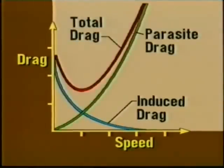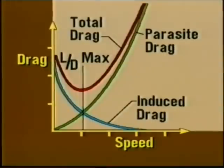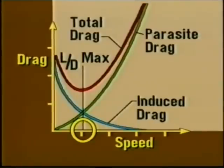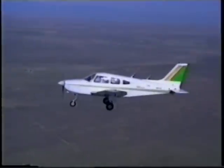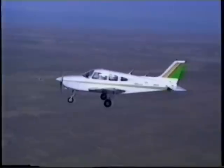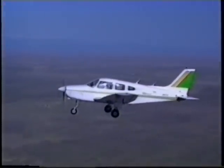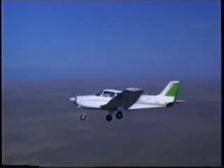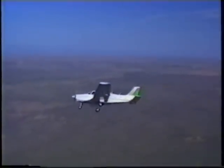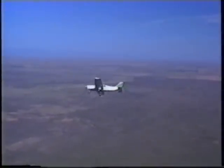If the two drag curves are combined and the values added together, there is a point where drag is at a minimum. This point is known as L over D max, which is where lift when compared to drag is at its greatest. In later sections you will see that flying the airplane at this speed provides the best glide ratio and other performance benefits. The information presented in this section has provided you with the fundamental knowledge of the forces at work on the airplane during straight and level unaccelerated flight. The next section will expand your knowledge of what happens to the four basic forces during maneuvering flight.